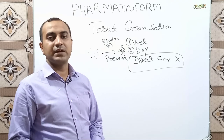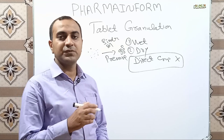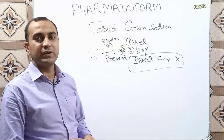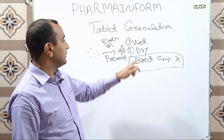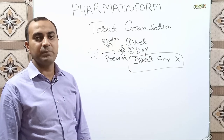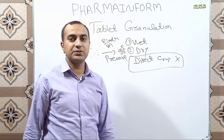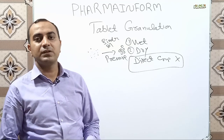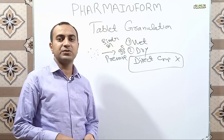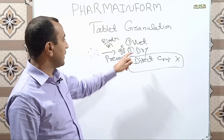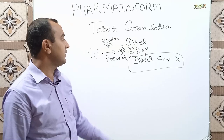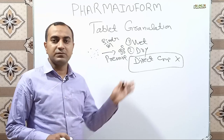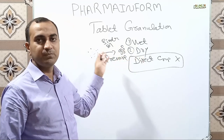The exact concept is that when someone asks about the methods of tablet manufacturing, then we can say there are three methods: wet granulation, dry granulation, and direct compression. But if we talk about the types of granulation, then there are only two types: wet granulation and dry granulation.